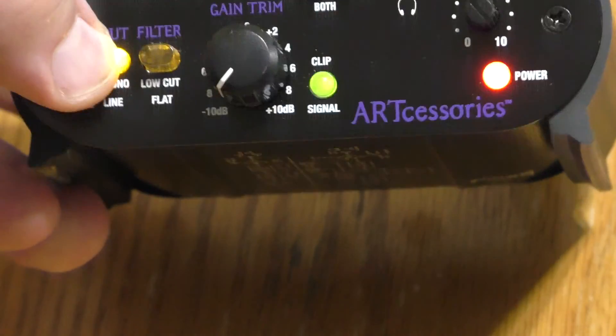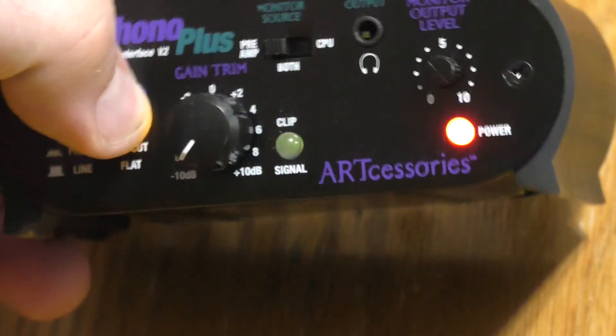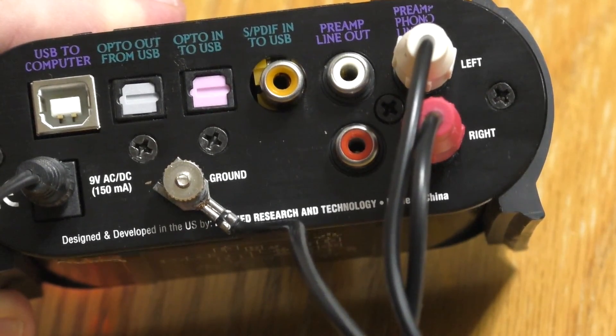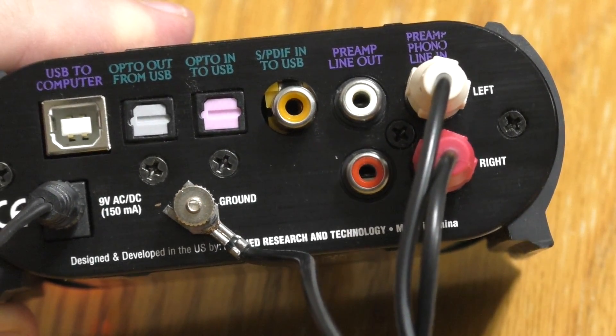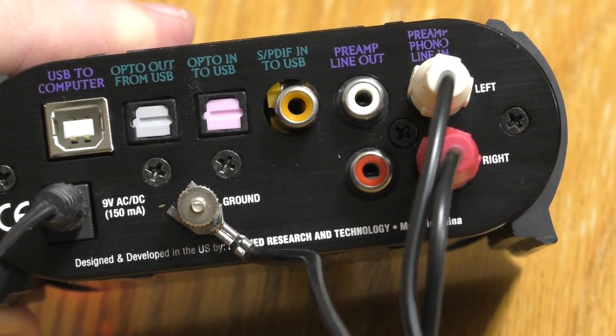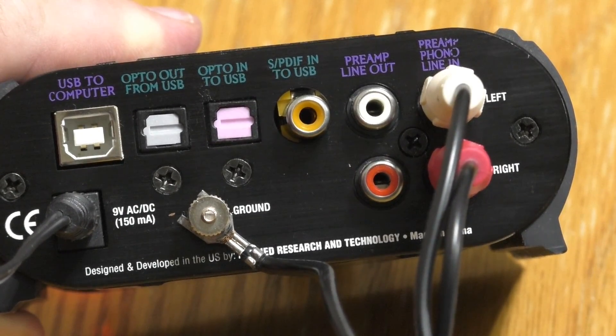Also it is switchable between phono level and line level, so line level sources can be converted to USB with the same device. It is important for your phono preamp to have a ground connection. Some low cost preamps lack this feature, and consequently can introduce hum into the audio signal.